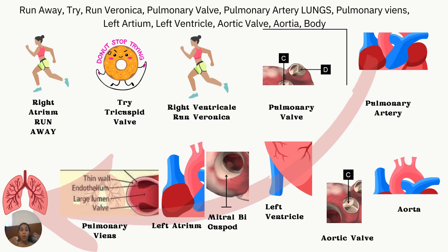That's just for me personally — do what works for you. These different valves are the checkpoints: you go from the right atrium, through the tricuspid valve checkpoint, to the right ventricle, through the pulmonary valve checkpoint, then to the pulmonary artery, and so forth. Make sure you really get this down and understand the different checkpoints.